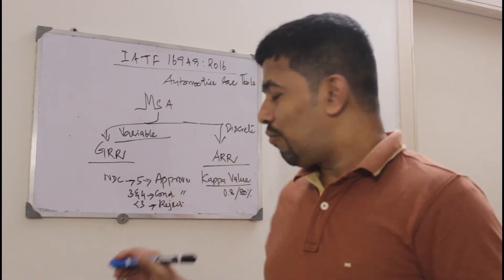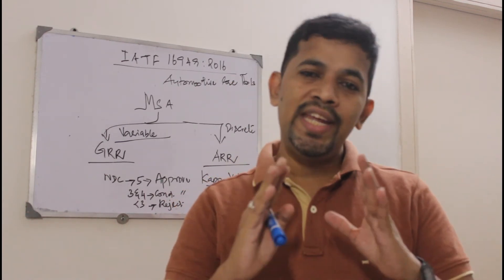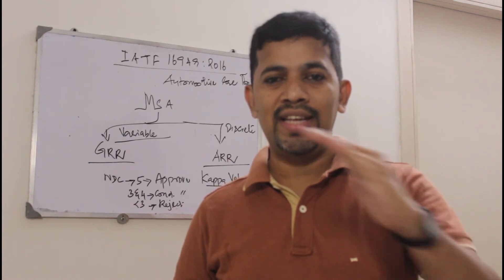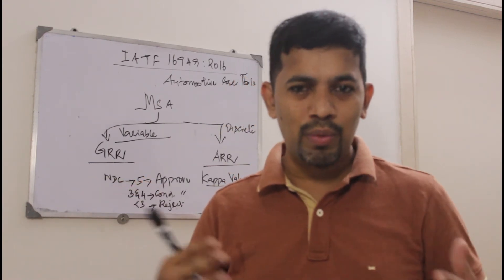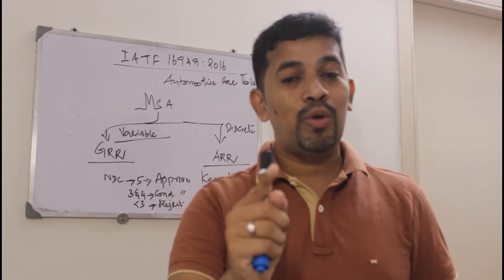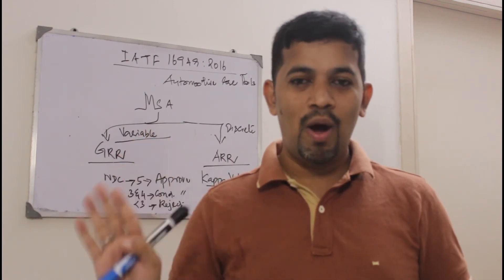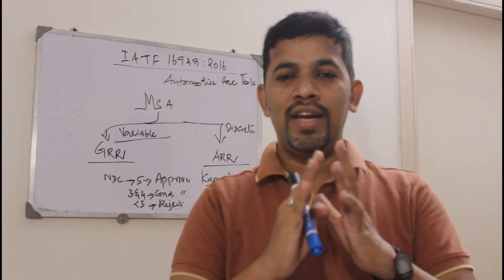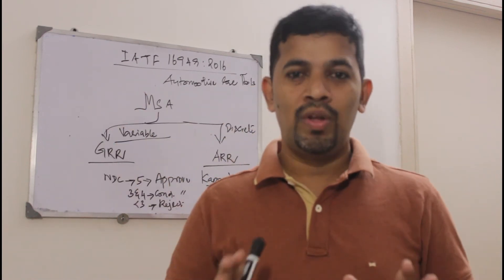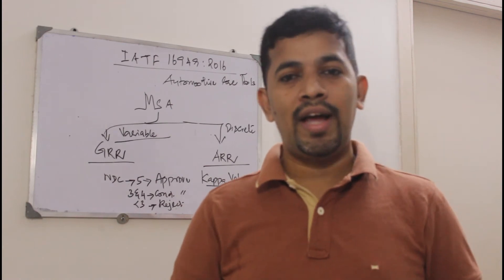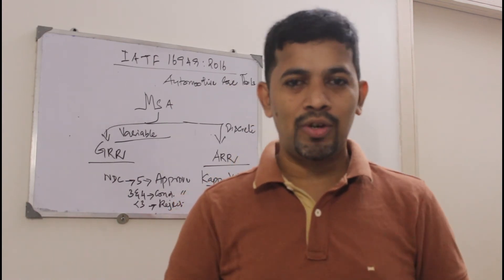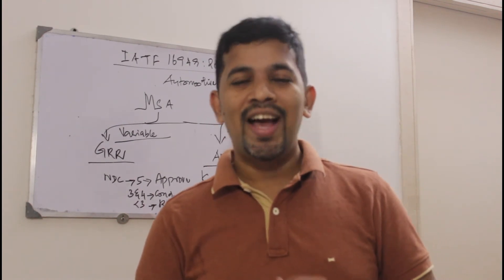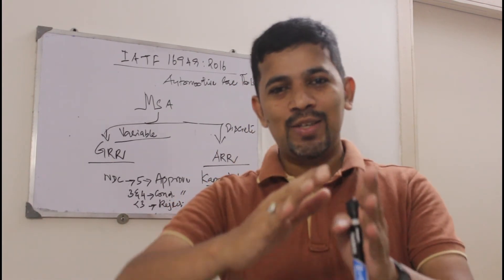When performing GRR in Minitab, it's very easy. Go to Stat, then Quality Tools, then Gauge R&R. The crossed method is widely used. Note that Minitab does not give decimal NDC values — it only gives whole numbers like 1, 2, 3, 4, 5, or greater than 5. Using Excel might give decimal values, but Minitab saves a lot of time and is more efficient and faster.